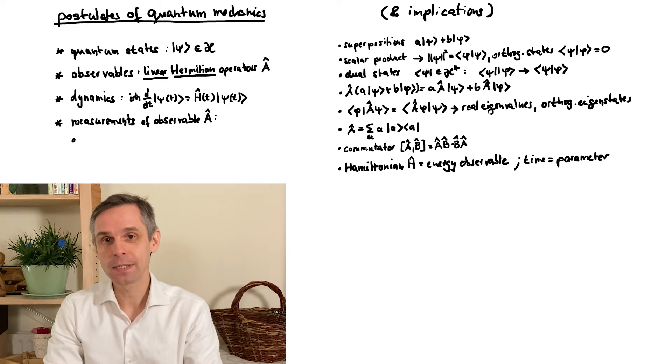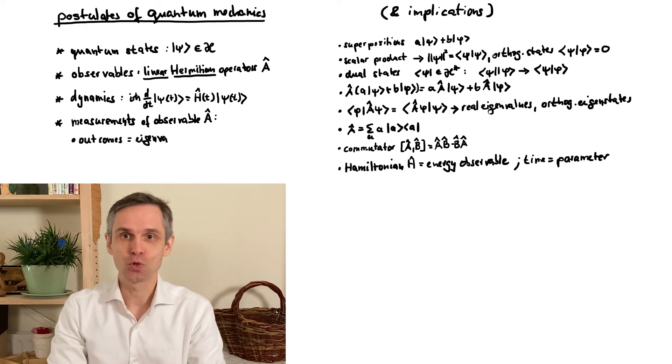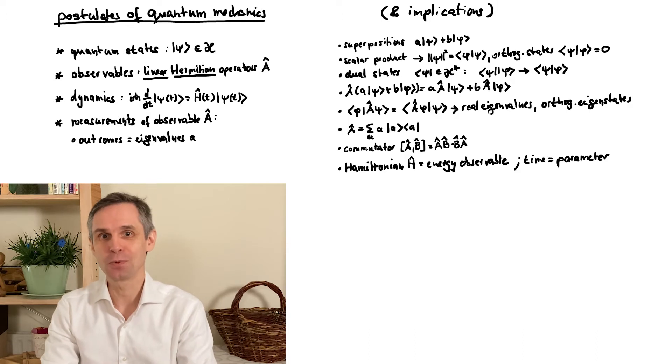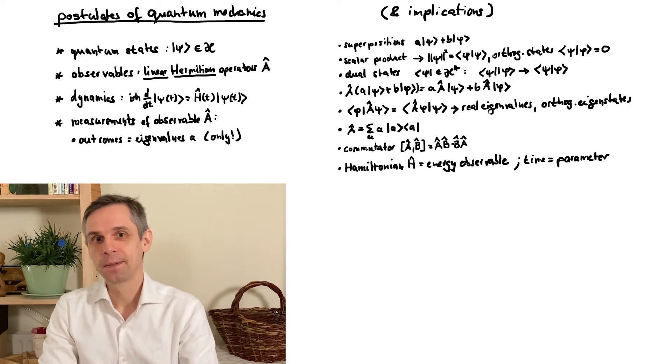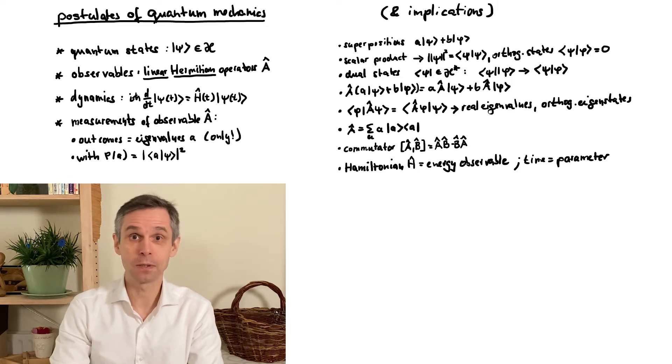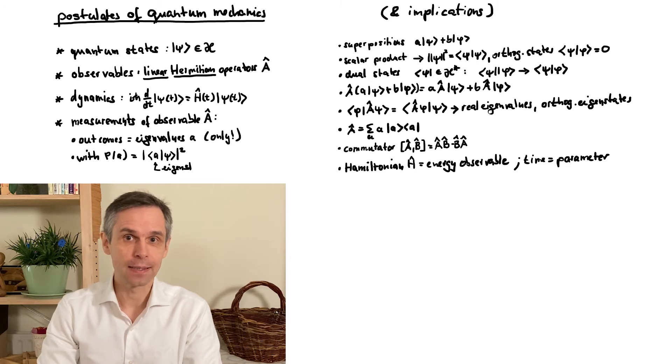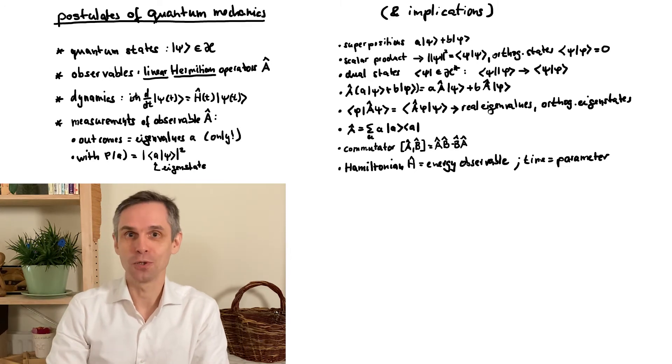Secondly, the possible outcomes of the measurements, the values that you can read off your apparatus, are restricted to the eigenvalues of this observable. Thirdly, these outcomes are probabilistic and up to overall normalization occur with the probability given by the absolute value squared of the scalar product between a and psi, where a is the eigenstate that corresponds to the value that you have observed.